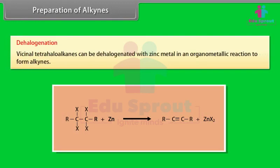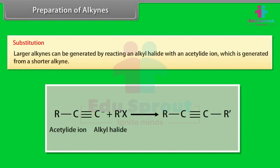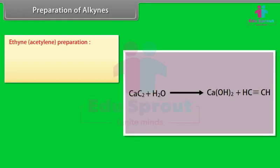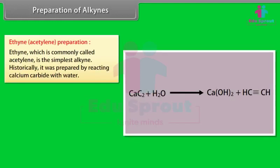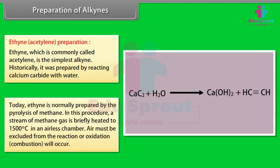Dehalogenation: vicinal tetrahalogenoalkanes can be dehalogenated with zinc metal to form alkynes. Substitution: larger alkynes can be generated by reacting an alkyl halide with an acetylide ion, which is generated from a shorter alkyne. Ethyne (acetylene) Preparation: historically, it was prepared by reacting calcium carbide with water. Today, ethyne is normally prepared by the pyrolysis of methane — a stream of methane gas is briefly heated to 1500°C in an airless chamber. Air must be excluded from the reaction or combustion will occur.